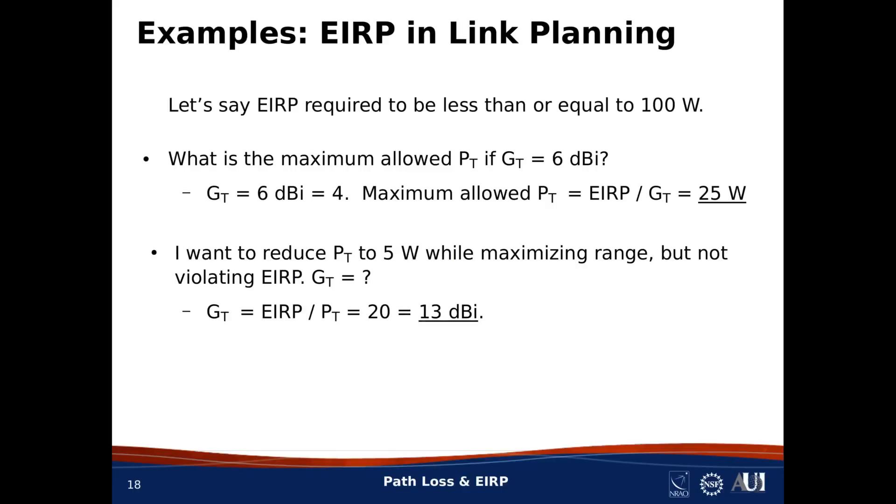Here's another example. Maybe I want to reduce the overall power consumption of my transmit station by reducing transmit power. Let's say I reduce transmit power to 5 watts, but maybe I still want to maximize the range under that constraint. Well, the Friis equation says I maximize range by maximizing EIRP, and transmit gain is EIRP divided by transmit power. So, the transmit gain should be 20 in linear units, which is 13 dBi. So, I know I should start looking for an antenna with 13 dBi gain.